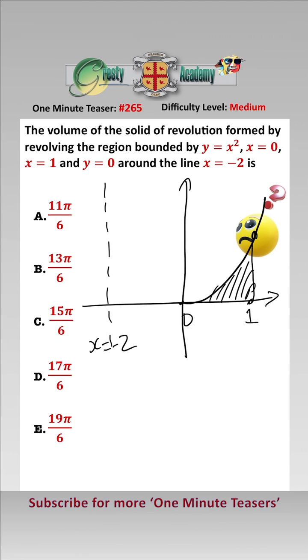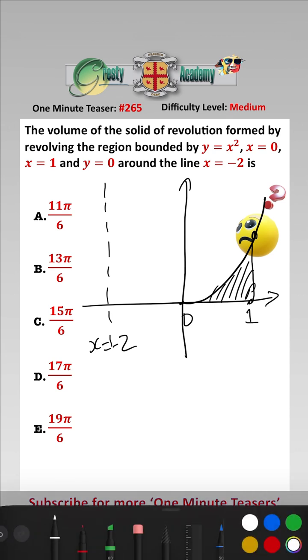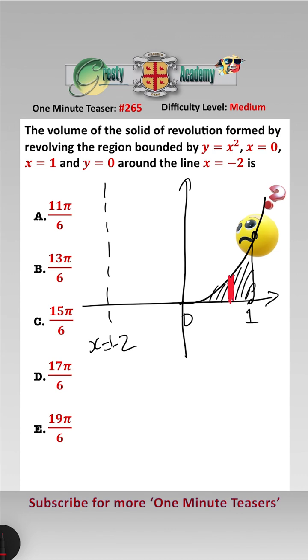And we're going to use the cylindrical shell method, so let's just change colour to make this slightly clearer. So what we are going to do is we're going to take each little piece here of thickness delta x, and its radius here is going to be 2 plus x.